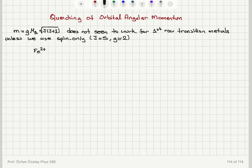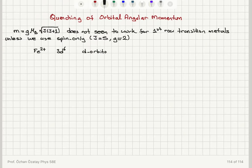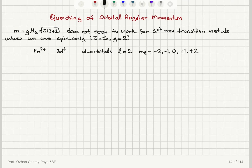The iron 2+ ion's valence electrons are in the 3d orbitals, ending with 3d6. To calculate what g·√(J(J+1)) would be, we need to find the J value. The d orbitals have orbital quantum number l = 2, since l=0 is s, l=1 is p, and l=2 is d. The m_l values are −2, −1, 0, +1, and +2. When we start placing these electrons into orbitals that have been separated according to the Zeeman effect, we place them at the −2, −1, 0, +1, and +2 energy levels.